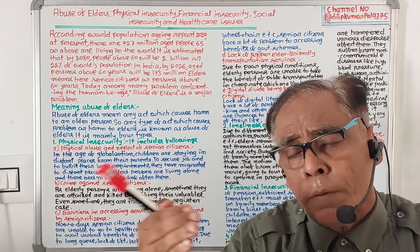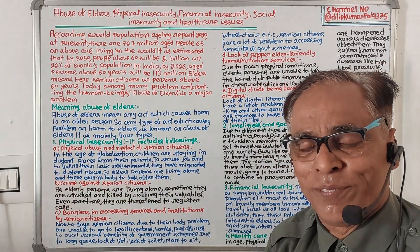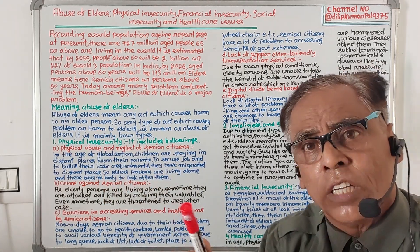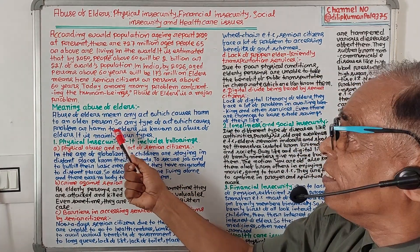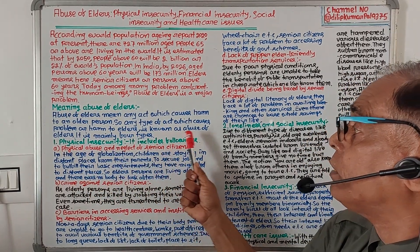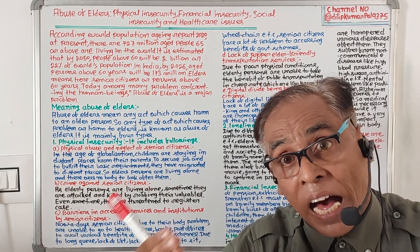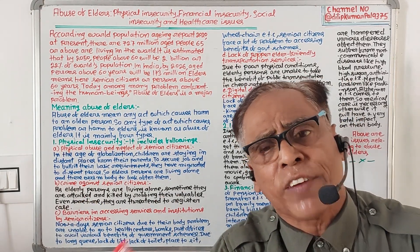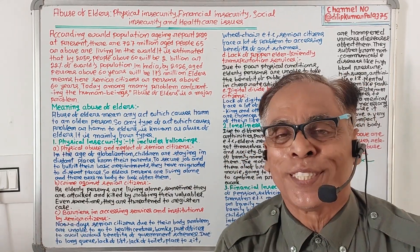Today, among many problems confronting human beings, Abuse of Elders is a major problem. Abuse of Elders means any act which causes harm to or creates problems for elder or older persons. It is of many types.